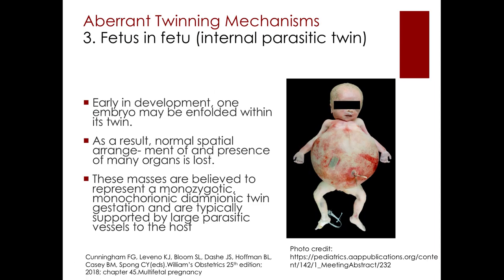Fetus in fetus, or internal parasitic twin, occurs when early in development one embryo is enfolded within its twin, resulting in loss of normal spatial arrangement of many organs. These masses are believed to represent a monozygotic monochorionic diamnionic twin gestation and are typically supported by large parasitic vessels to the host.